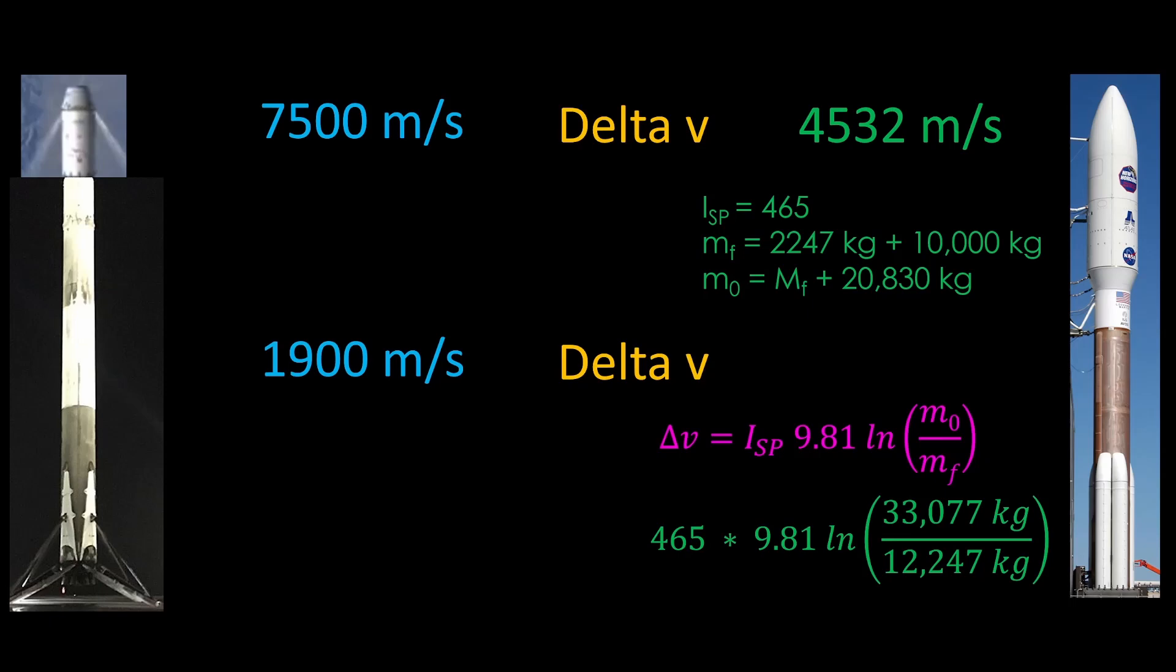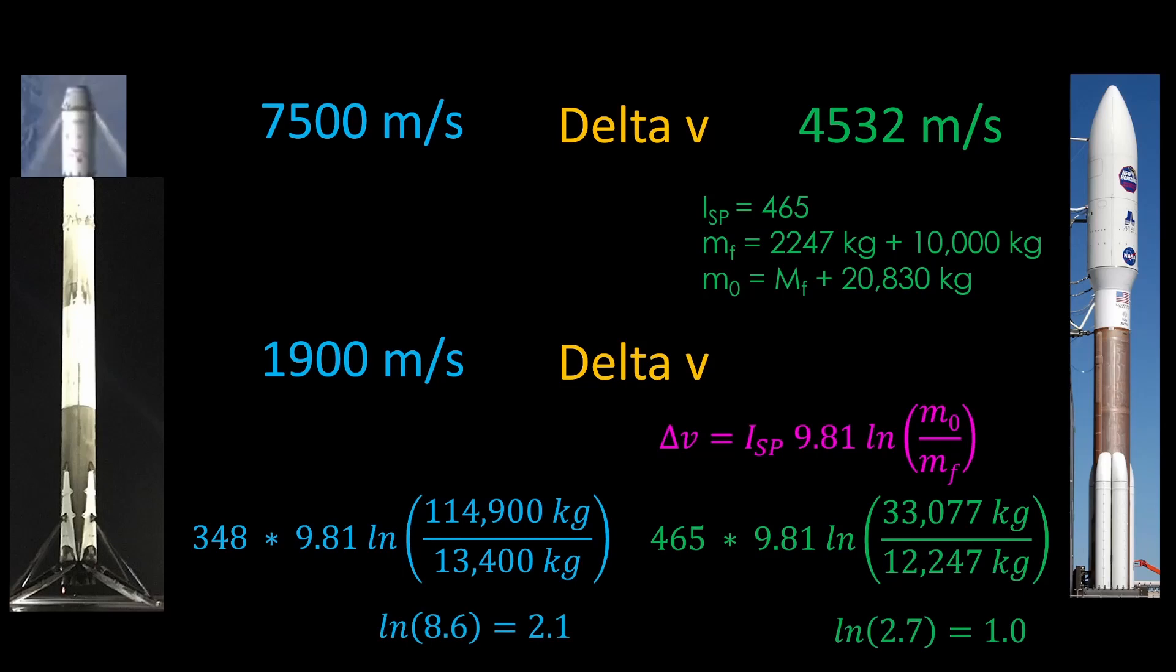That's only about 60% of the delta V that the Falcon 9 second stage produces. What's going on? If we look at the Falcon 9 second stage numbers, it becomes clearer. The Merlin vacuum specific impulse is only 348, or about 25% less than the 465 the RL-10 gets. The two stages are about the same dry weight, but the Merlin is burning RP-1, which is much, much denser than the hydrogen used by the RL-10, and the Falcon 9 second stage has slightly bigger tanks than the Centaur, so it packs in 111,500 kilograms of propellant versus the 20,830 kilograms the Centaur has. That gives the Falcon 9 second stage a mass ratio of 8.6, and the natural log of that is 2.1.